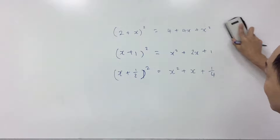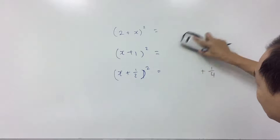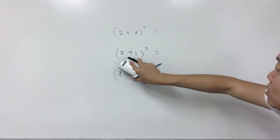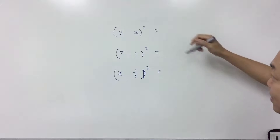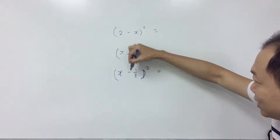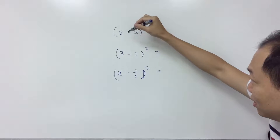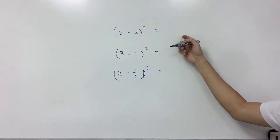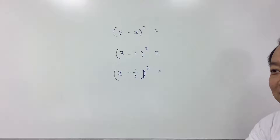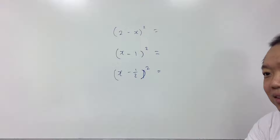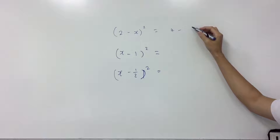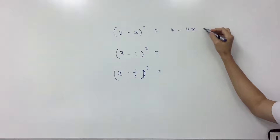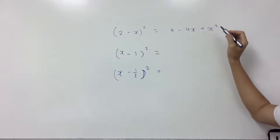Now we try rule number two. So obviously everything changes — everything changes to minus. Right? Okay, count three. What's this? It's negative. First one: four minus four X plus X squared. Yeah, that's right.